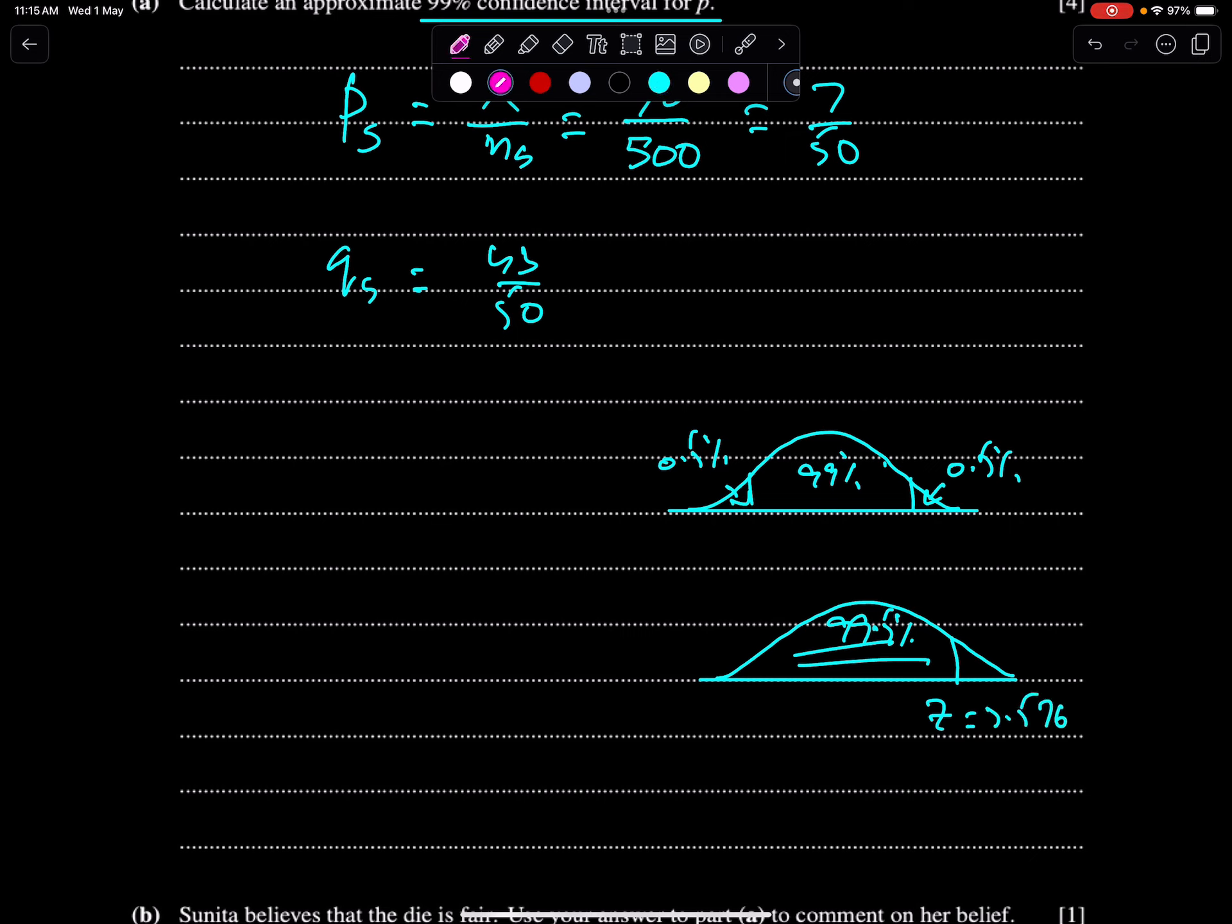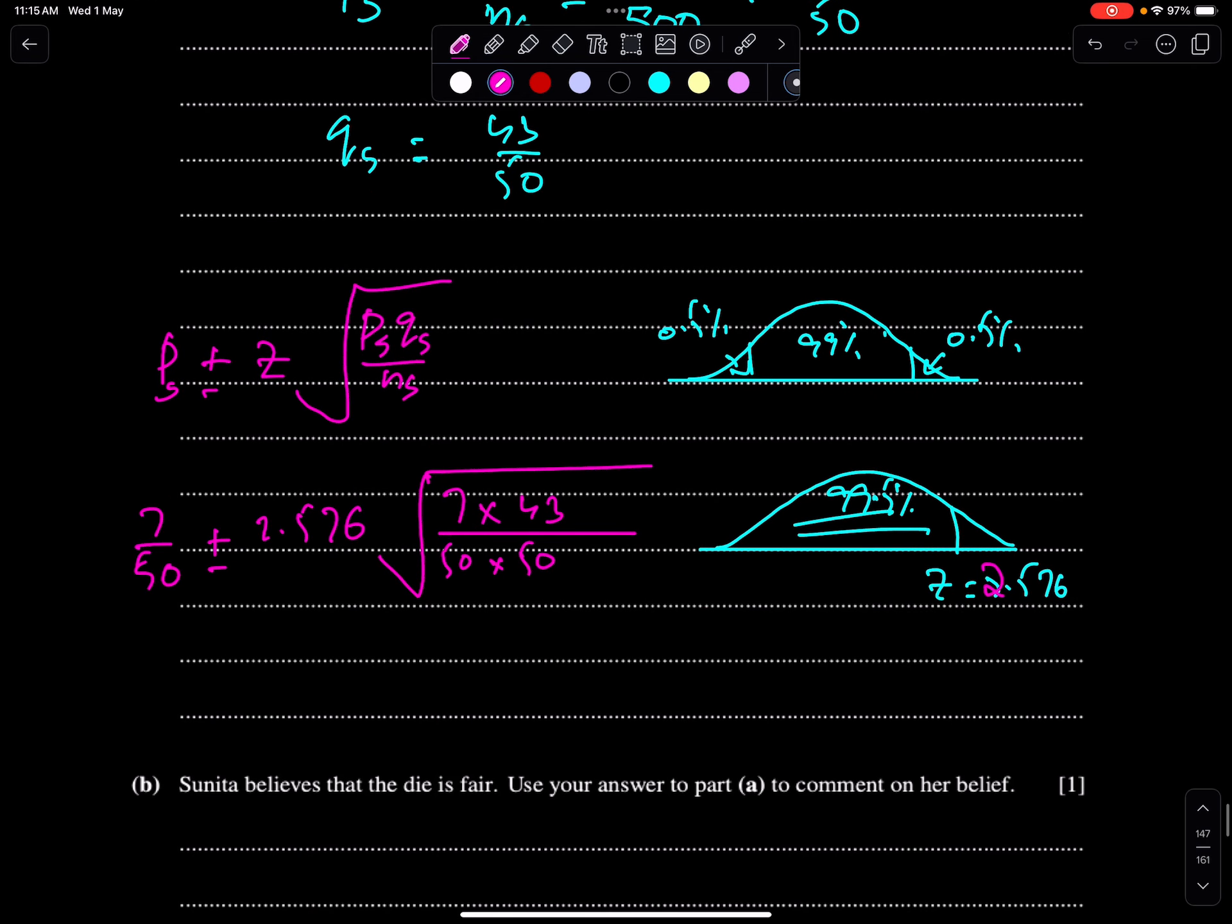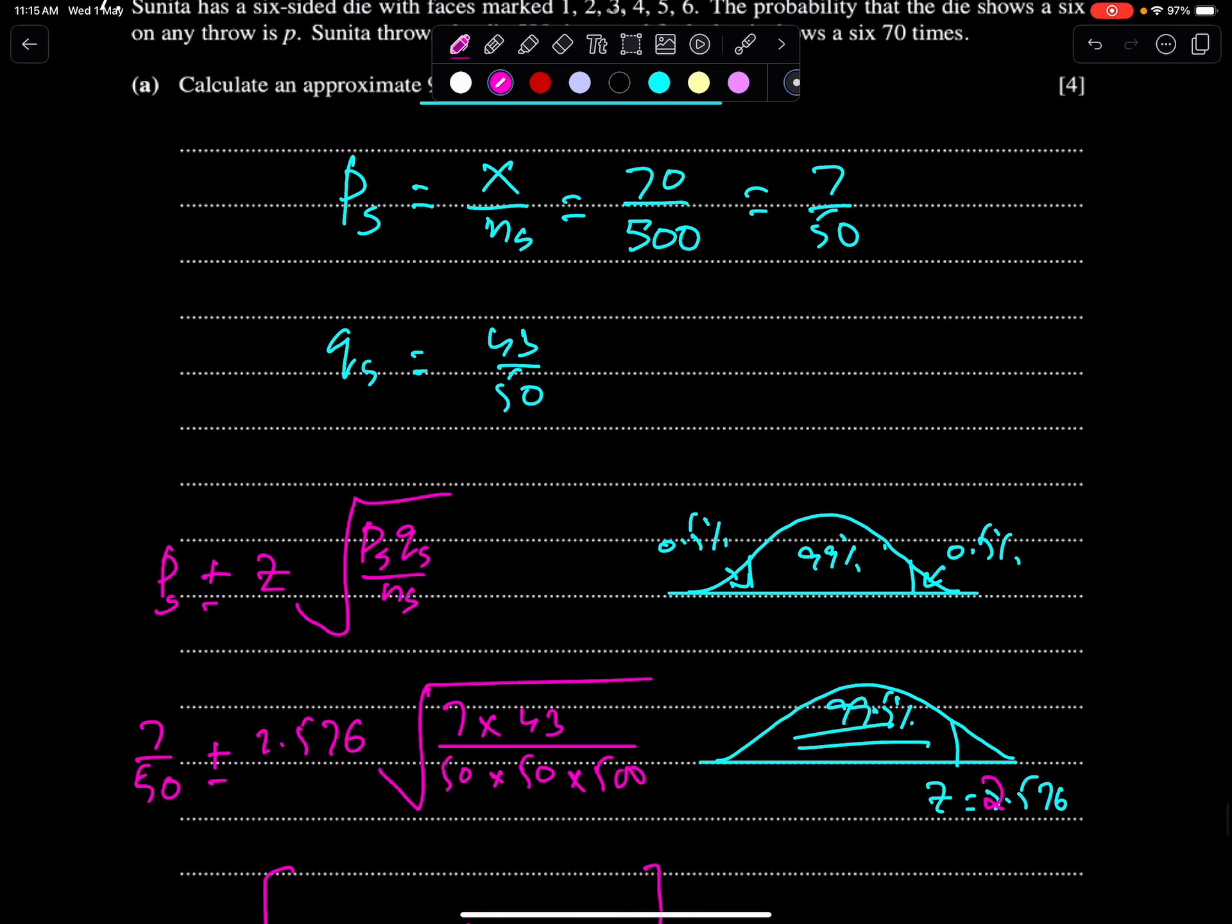Now this is the formula of confidence interval for PS. Z, PS, QS, QS, NS. So PS is 7 over 50 plus minus 2.576, PS is 7, QS 43, 50 twice for both PS and QS, and sample size is 500. So when you will simplify this you will get the confidence interval. So this is the way to find the confidence interval for PS.